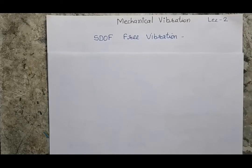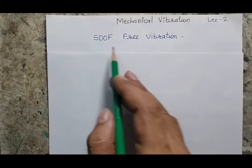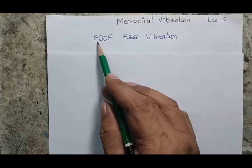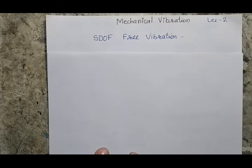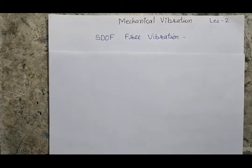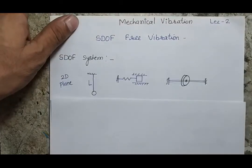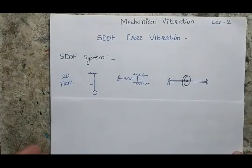Hello and welcome to the lecture on mechanical vibration. Today we are going to talk about single degree of freedom free vibration. A single degree of freedom system has only one degree of freedom, and I want to understand and write the equation of motion of the vibratory motion of this system. Before we derive the mathematical expression, let me explain single degree of freedom using three examples.